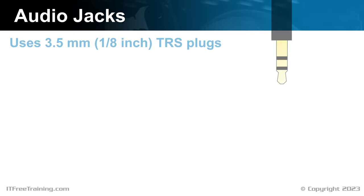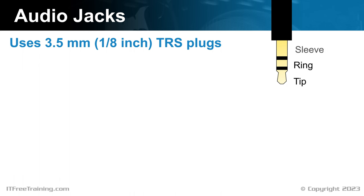I will look at the audio jacks. Pretty much all computers have audio jacks on the back of the computer in the I/O panel. These jacks are 3.5mm or 1⅛ inch TRS plugs. The connector is a metal cylinder which is divided up by insulation into different parts. With audio, the cylinder is broken into three parts which are called tip, ring, and sleeve — thus the name TRS.